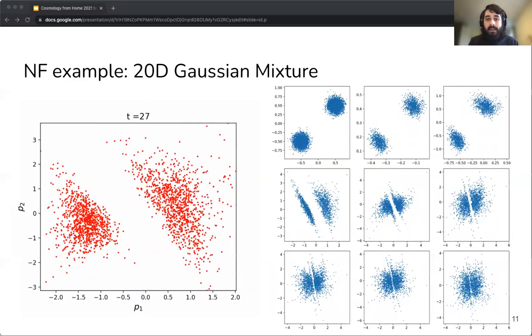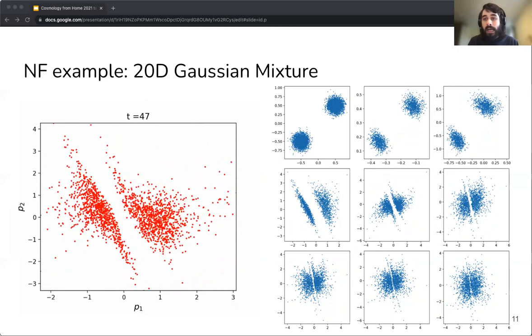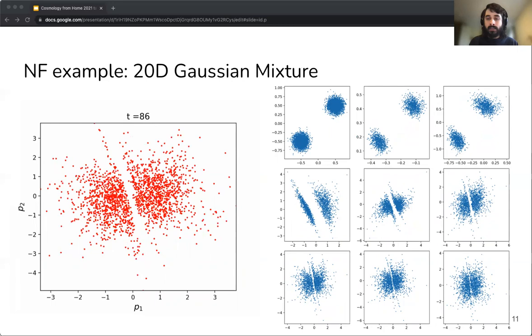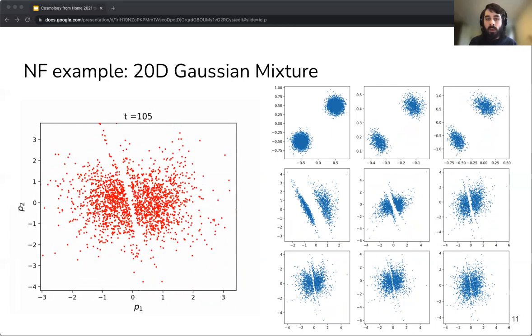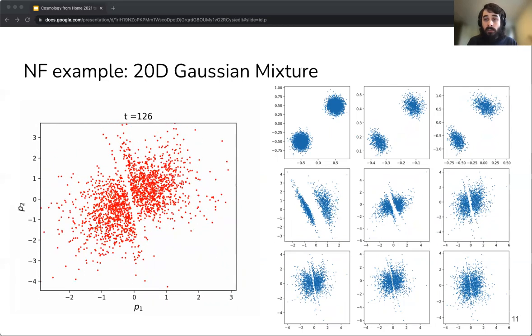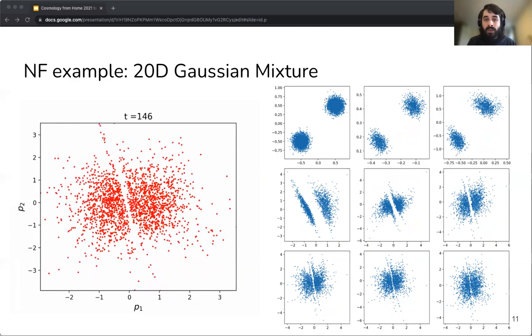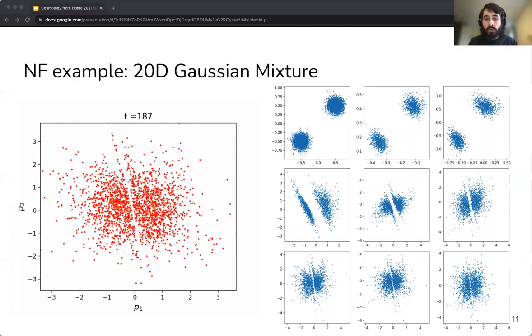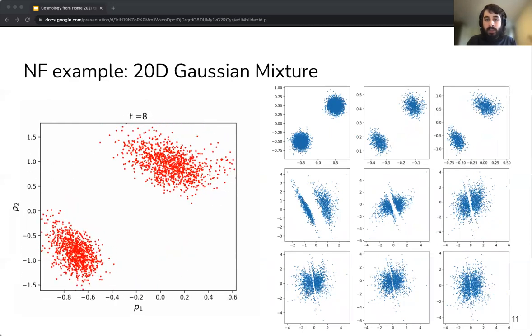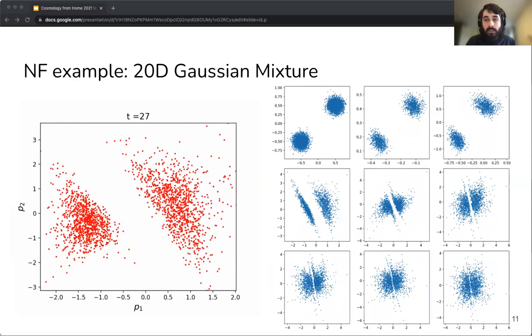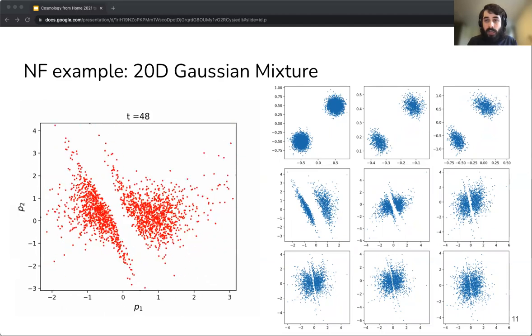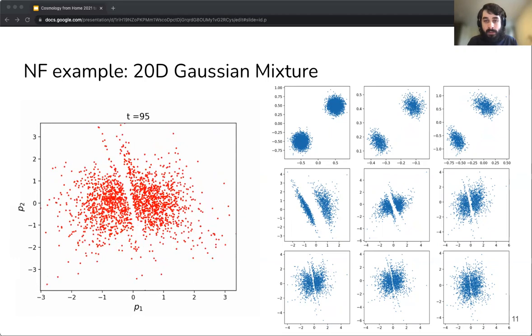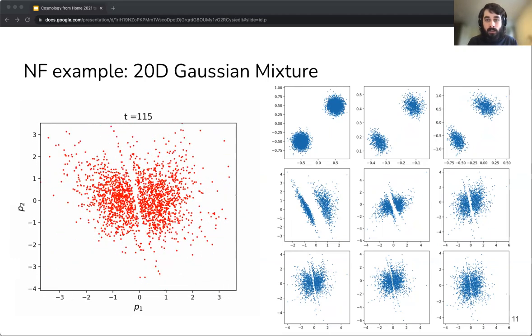Another example is the case of the 20-dimensional Gaussian mixture. This is a distribution with two well-separated peaks that are transformed into a normal or Gaussian distribution. As we can see here, the normalizing flow can even bring different peaks or modes of the posterior closer together, thus bridging the gap and making sampling much easier as multimodality, cases with many peaks, are one of the most difficult and challenging cases that MCMC can handle.